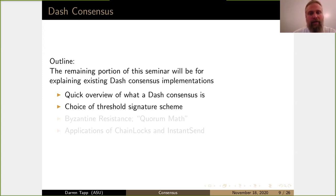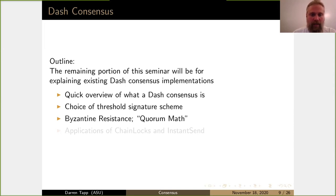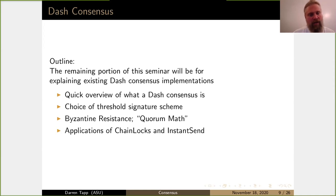We're going to talk about a choice of threshold signature scheme. I saw some advertisements that said we'd talk about crypto, so let's talk about what kind of thought process went into choosing what type of threshold signature to do. Then I'd like to go into the Byzantine resistance — what a member of the DASH team called 'quorum math' — which was needed to understand how secure this would be. We'll also have time to talk about applications of chain locks and instant send, which I consider the two main applications that are live on the network.